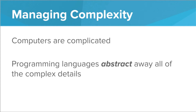Computers are very complicated and we need to manage that complexity if we're ever going to be able to accomplish anything with them. So programming languages abstract away all of the complex details. When you're programming there's a lot going on under the hood inside the computer that we don't need to worry about. The computer is processing millions of numbers per second, putting lights on a screen, flashing pixels, electricity running through circuits — and we don't have to worry about that, because programming languages abstract away those low level details.